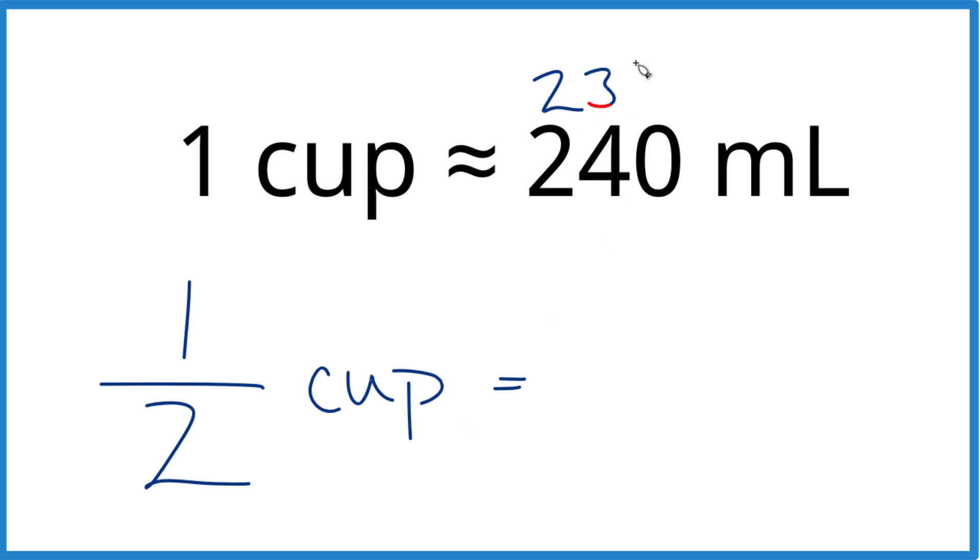If you want to be really exact, it's 236.6 milliliters. But we're going to work with 240 here. This usually works pretty well. So if one cup is 240, half cup is just half of 240. That's 120 milliliters. And that's it. If you know this, this part gets kind of easy.